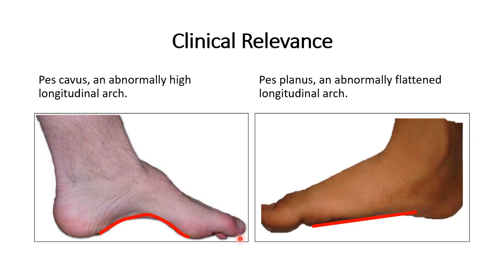Pes cavus is a high arch — specifically an unusually high medial longitudinal arch. It is typically asymptomatic early in life but becomes symptomatic with increasing age. As the arch increases, shock absorption during walking decreases, causing increased stress at the base of the first metatarsal and the heel, leading to pain, calluses, and possible stress fractures. Treatment is mostly orthotic/corrective rather than surgical.